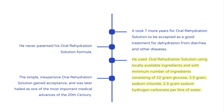He used oral rehydration solution with locally available ingredients, consisting of 22 grams glucose, 3.5 grams sodium chloride, and 2.5 grams sodium hydrogen carbonate per liter of water. The simple, inexpensive oral rehydration solution gained acceptance and was later hailed as one of the most important medical advances of the 20th century.